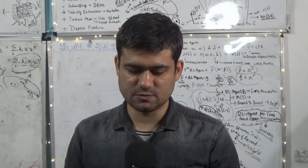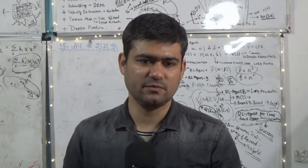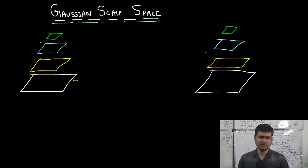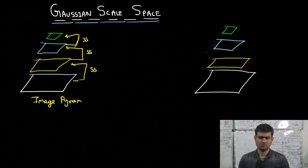In the previous lectures we discussed the image pyramid and the Gaussian pyramid. In the image pyramid, we start with an image and then we sub-sample it to get the next image, then sub-sample again to get the next image in the pyramid, and so on. This is the image pyramid of the original image I.